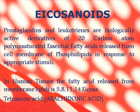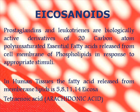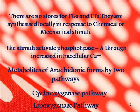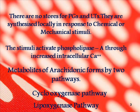Eicosanoids are obtained from eicosa acids. In the body, prostaglandins, thromboxins, and leukotrienes are derived from di-, tri-, tetra-, or pentaenoic acids, and collectively they are called eicosanoids. In human tissues, the fatty acid released from the membrane lipid is 5,8,11,14-eicosatetraenoic acid, which is the major precursor of prostaglandins and leukotrienes.